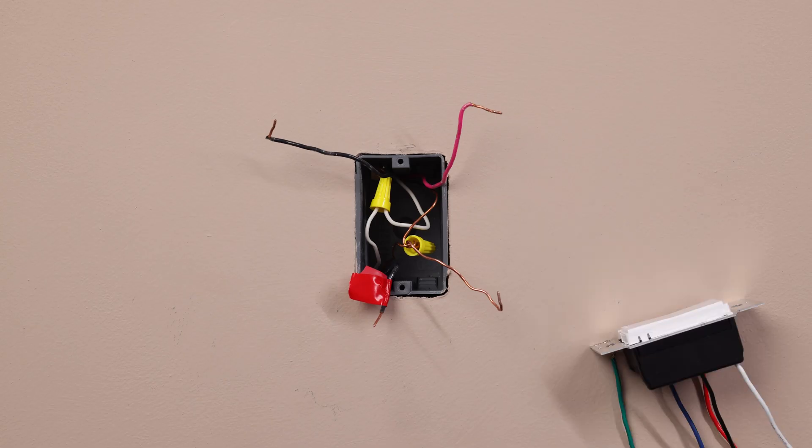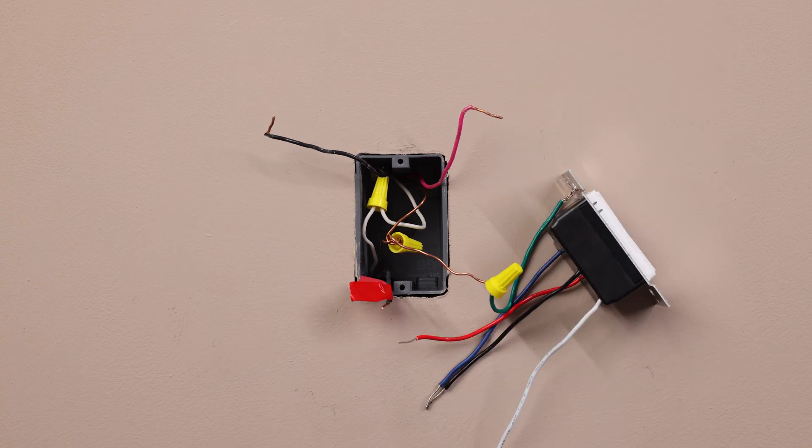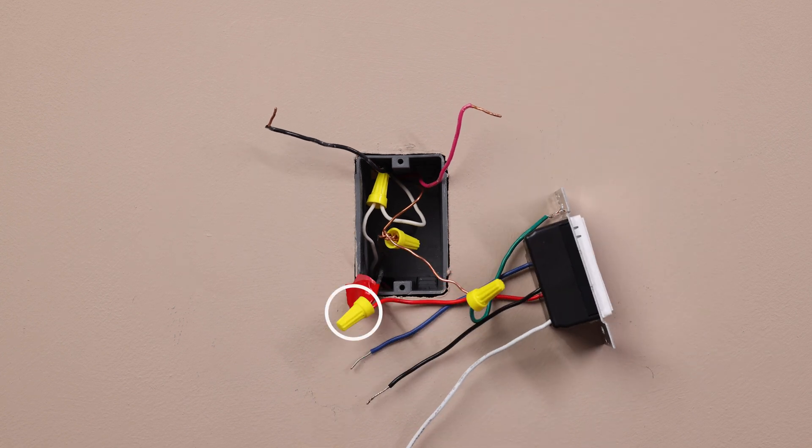Connect the ground wire, typically a bare copper wire, to the green wire on the switch and connect the tagged wire to the red wire on your new switch.